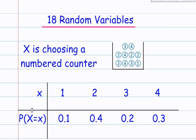So X is choosing a numbered counter, and these outcomes can be 1, 2, 3, and 4. There are 10 counters, one of which is a 1, so that's 1 out of 10, 0.1. There are 4 2's, so 4 out of 10, 0.4.